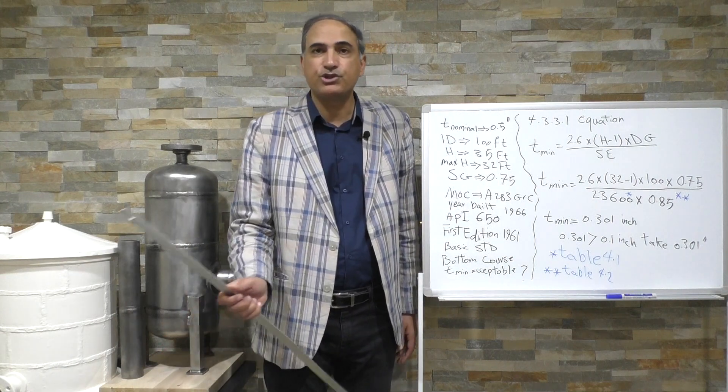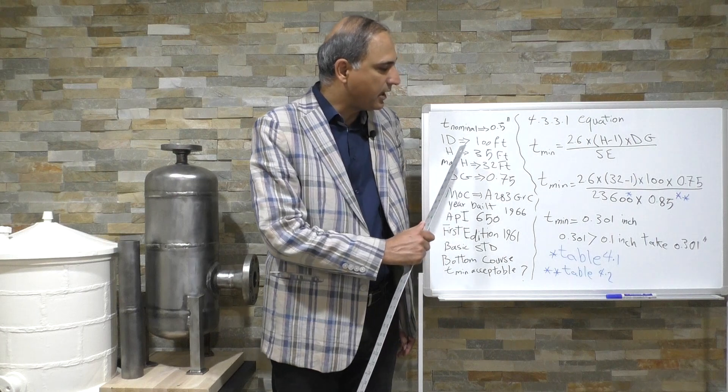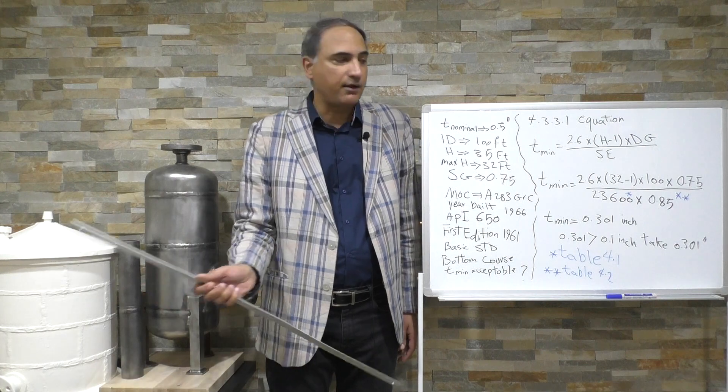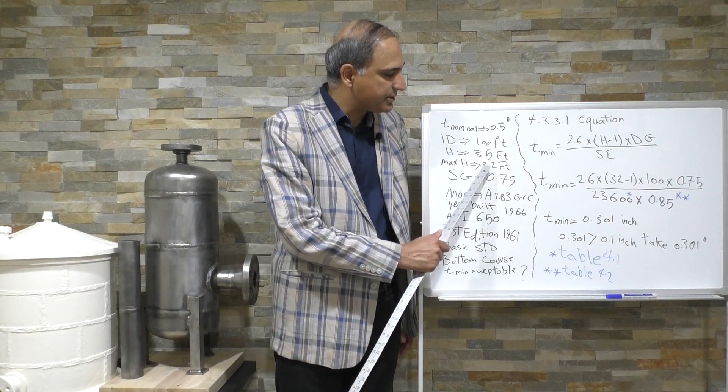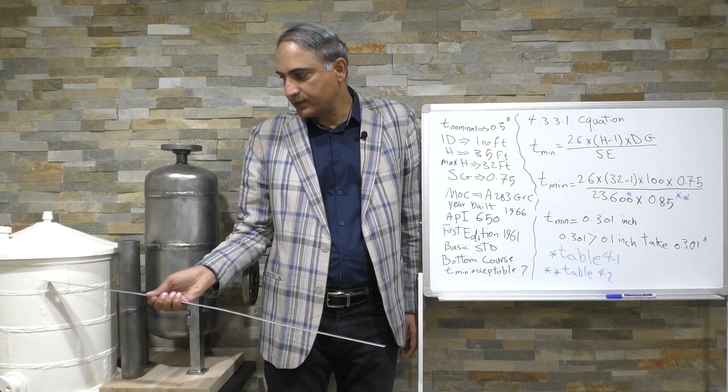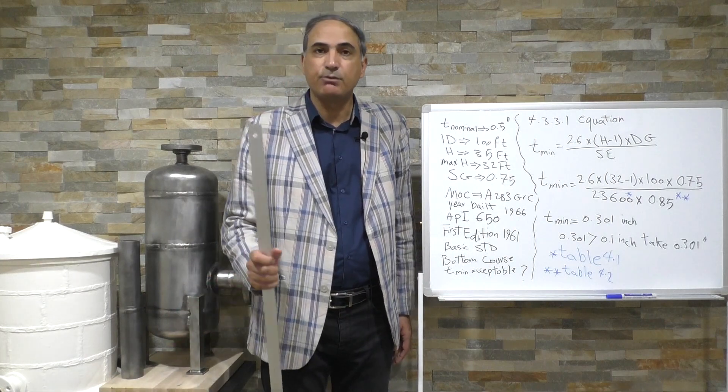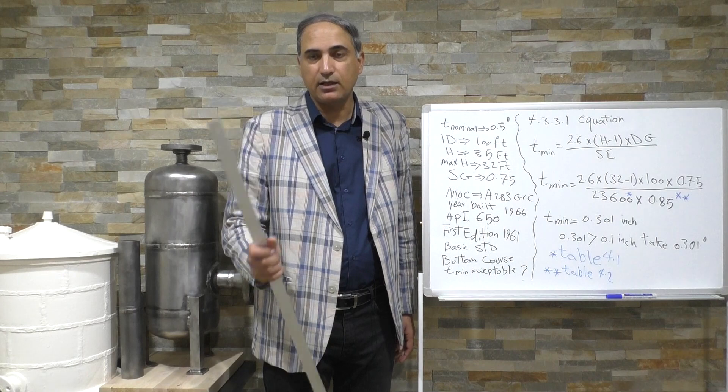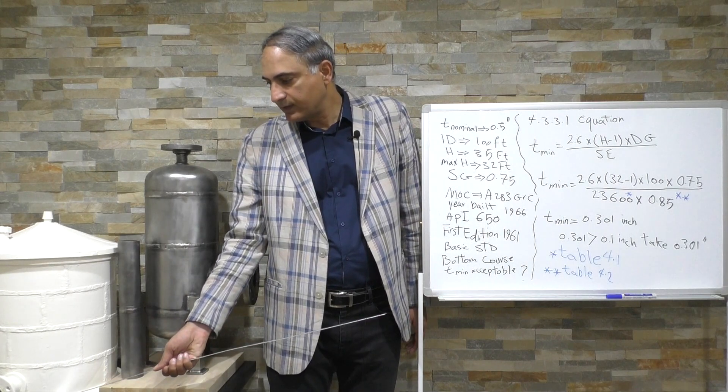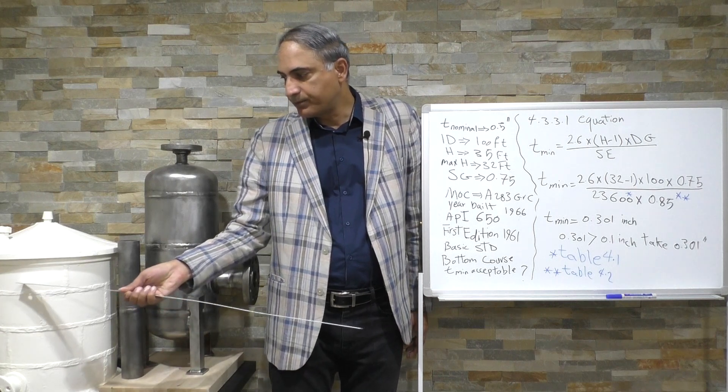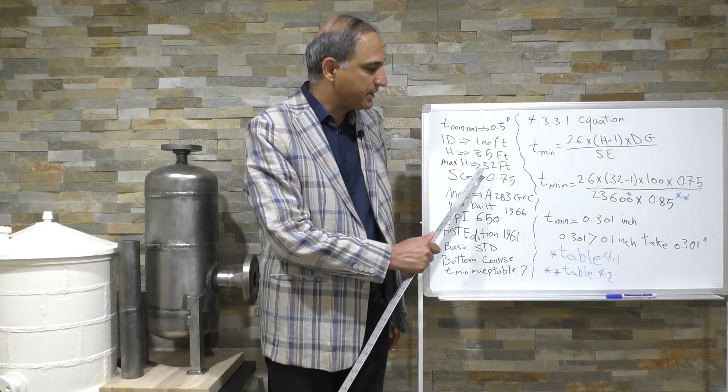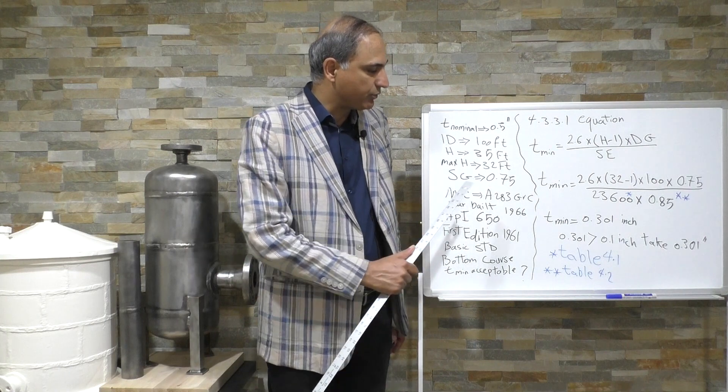Inside diameter of our storage tank is 100 feet and the height is 35 feet, from here to here is 35, but the maximum liquid level is 32 feet. So the designer designed the maximum liquid to be up to 32 feet. So there's a difference between the maximum liquid level and height of the storage tank. The height is a physical height but actually the maximum liquid level is the way that we designed and then operator is not going to let the liquid level go beyond the 32 feet based on the problem information provided to us.